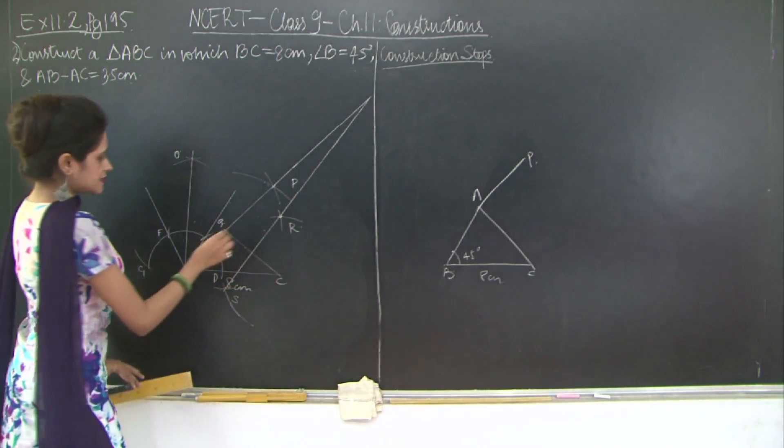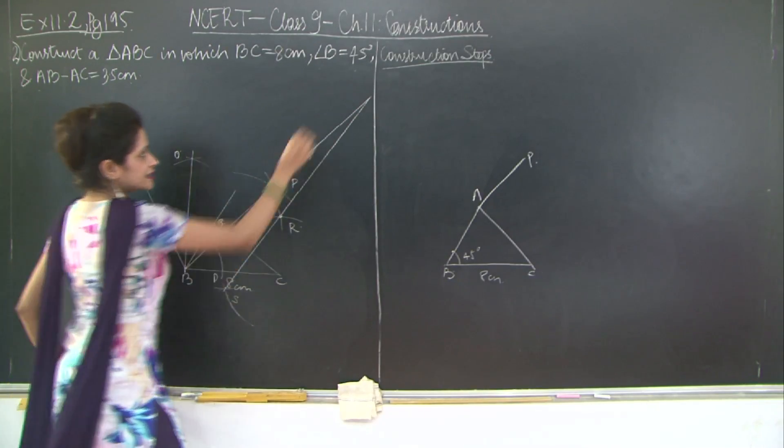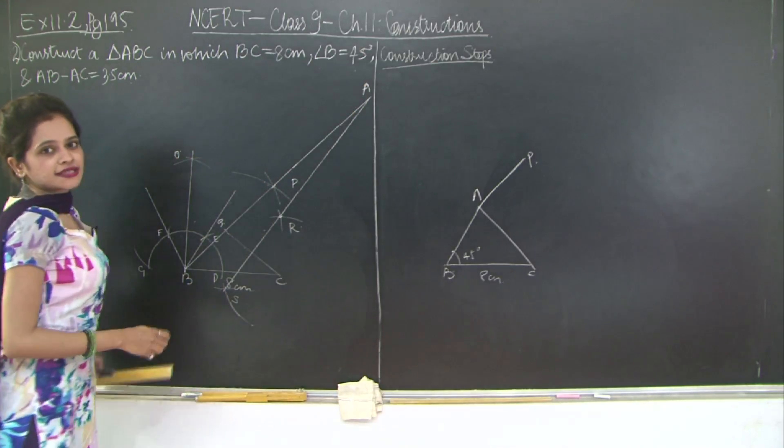Let R and S and this line segment BP intersect at point A, then you join A to C.